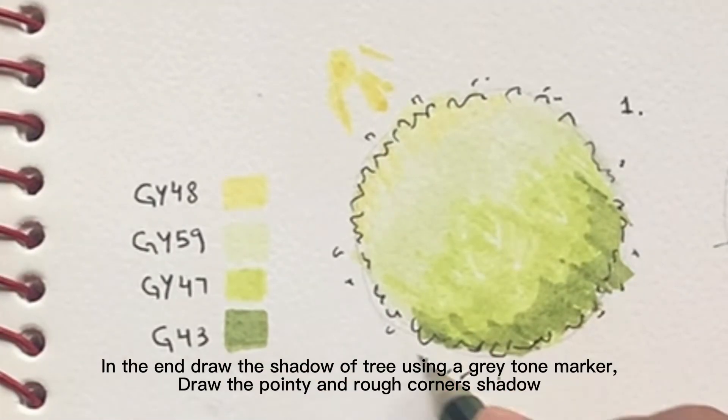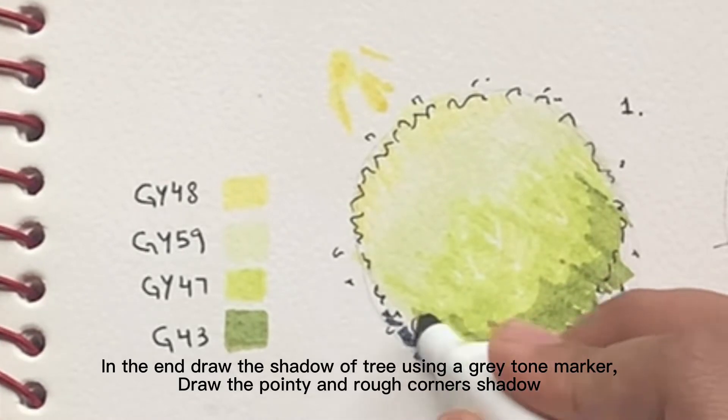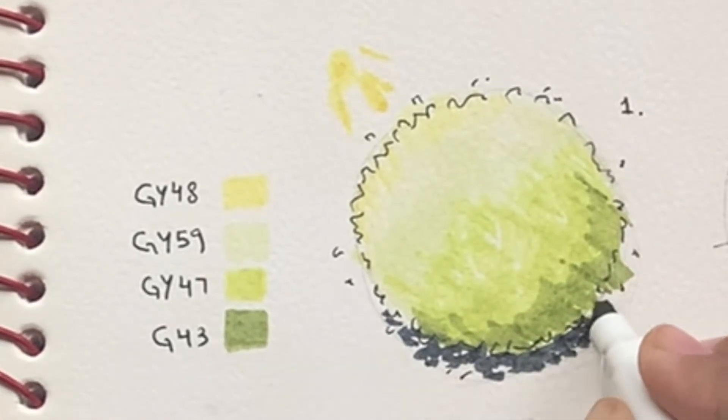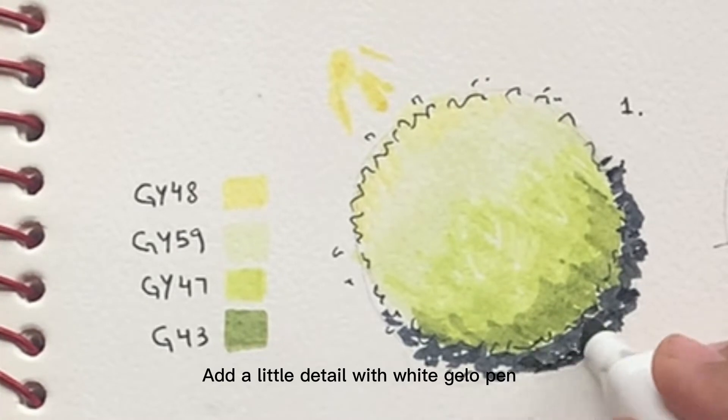In the end draw the shadow of tree using a gray tone marker. Draw the pointy and rough corners shadow. Add a little detail with white gel pen.